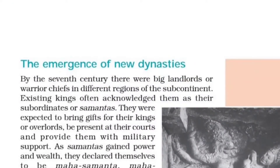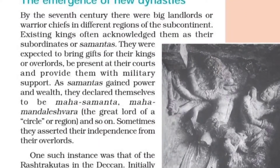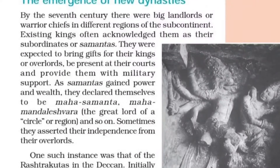By the 7th century, there were big landlords and various chiefs in different regions of the subcontinent. Existing kings often acknowledged them as their Samantas. They were expected to bring gifts for their kings or overlords, be present at their courts, and provide them with military support.